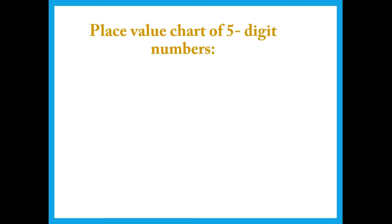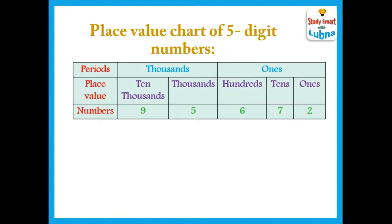Now we have a place value chart of 5-digit numbers. In this place value chart we are having periods, place values and the numbers. We have two periods: ones and thousands. The place values of the ones period are ones, tens and hundreds. The place values of the thousands period are thousands and ten thousands. The numbers given are 9, 5, 6, 7 and 2.